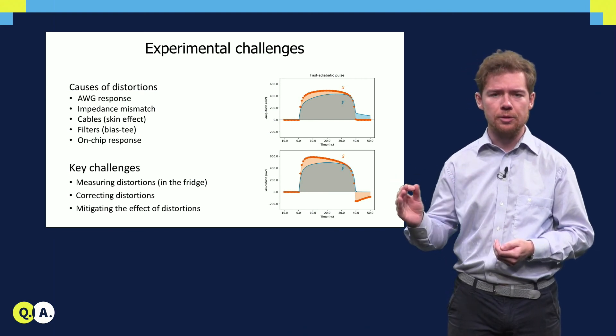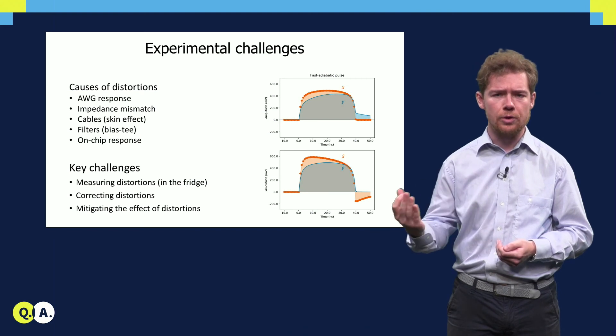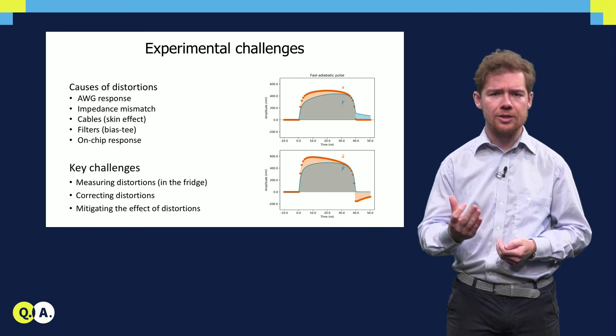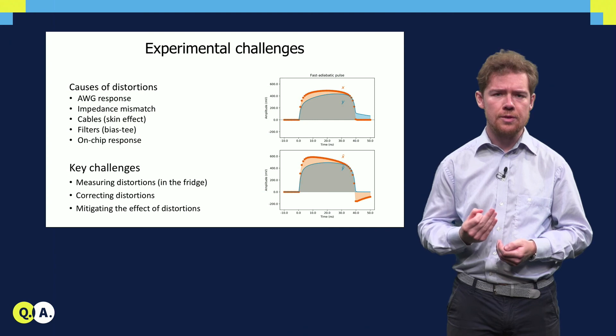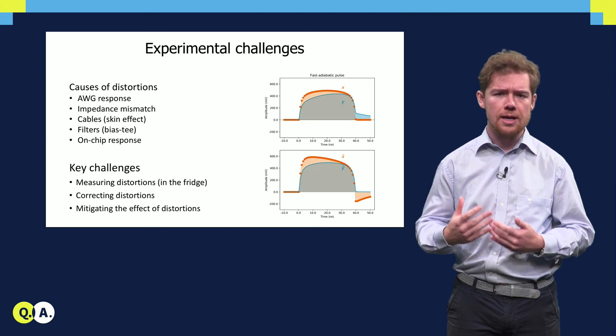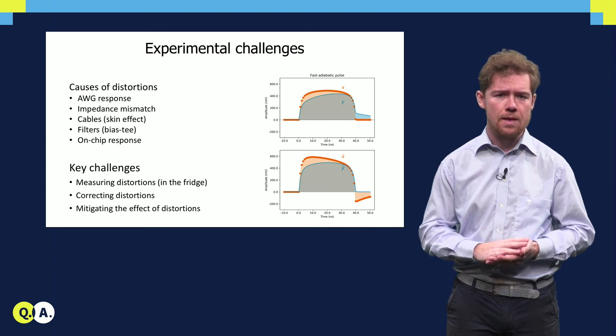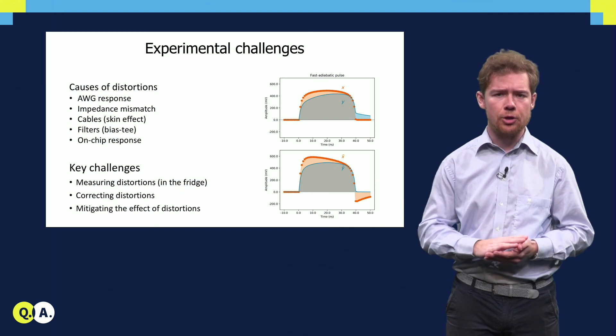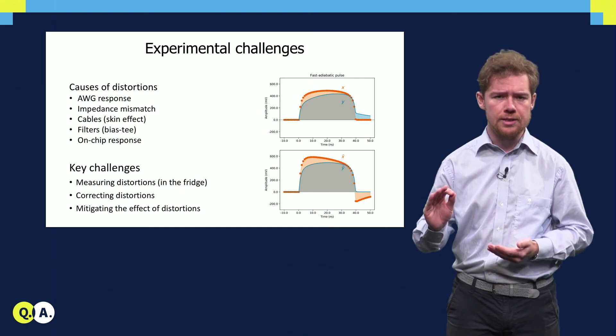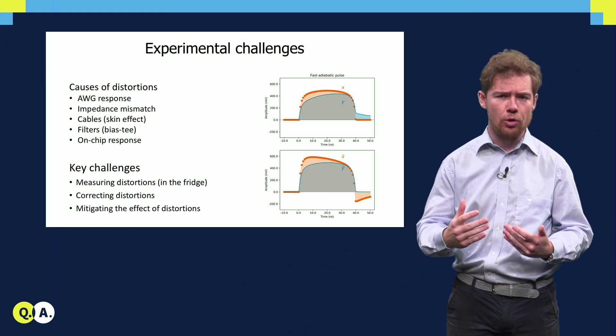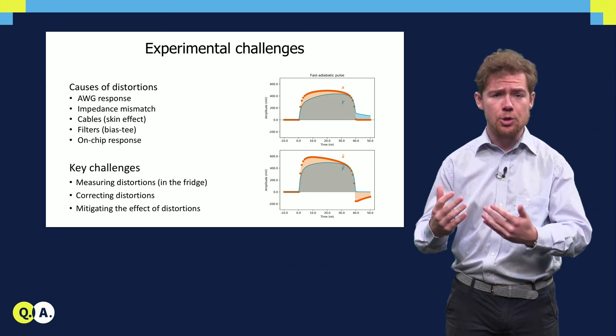The key challenge in flux pulsing-based CZ-gate is to correct for these distortions. This requires characterizing the distortions that the qubit experiences when cooled down and correcting these with sufficiently high precision. At the same time, efforts are underway to become more resilient against these effects, both by exploring new pulse-shaping techniques and through innovations in the hardware.